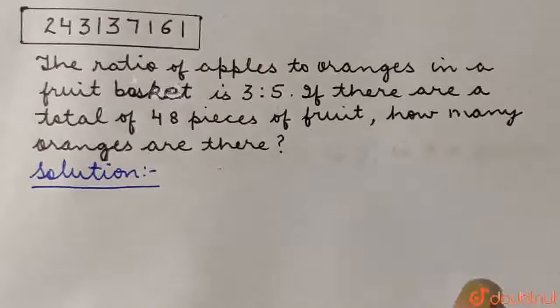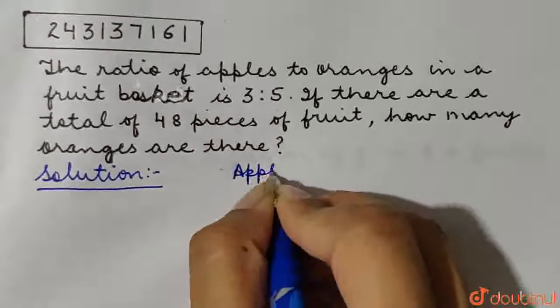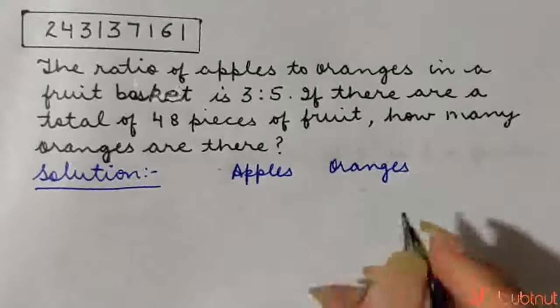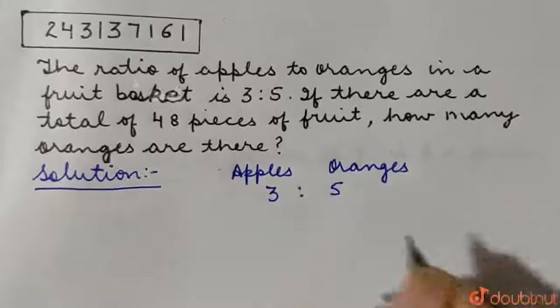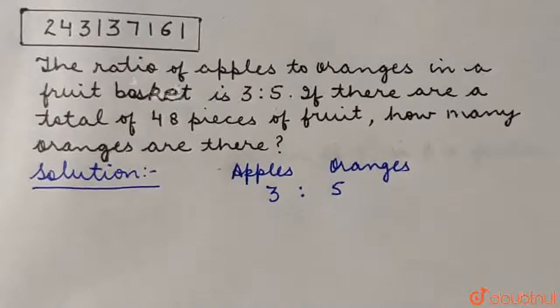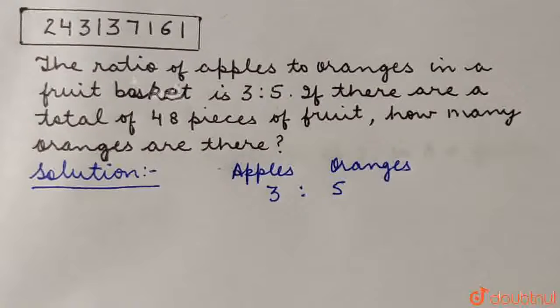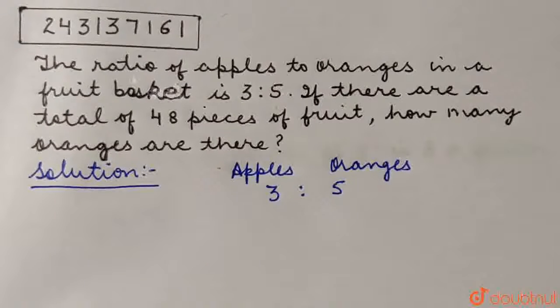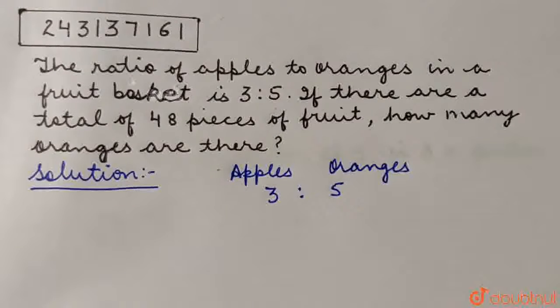So we have two kinds of fruit, apples and oranges in a fruit basket which are in the ratio of 3 is to 5. That means out of a total of 48 pieces, the ratio is divided as 3 is to 5. We need to calculate how many oranges are there.